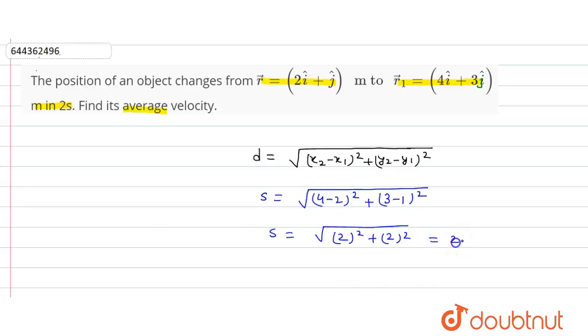That is equal to 2 root 2. Okay, so this is the value of s. Now average velocity is equal to average velocity...